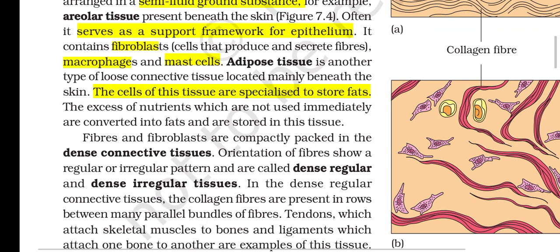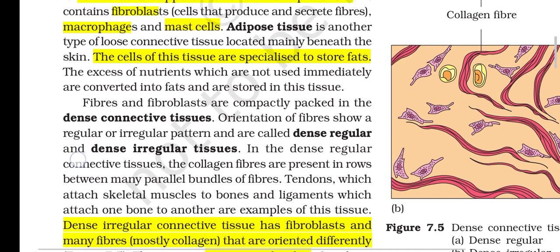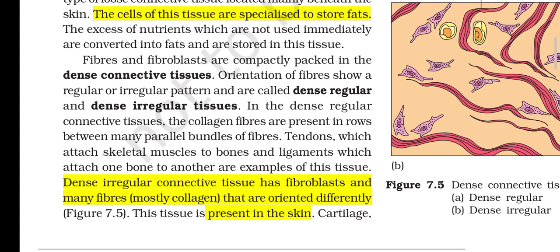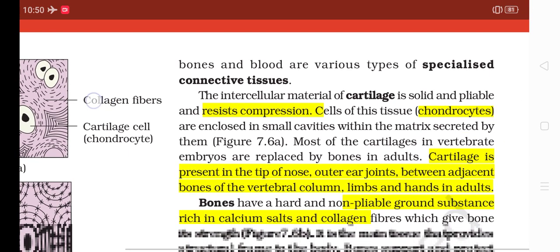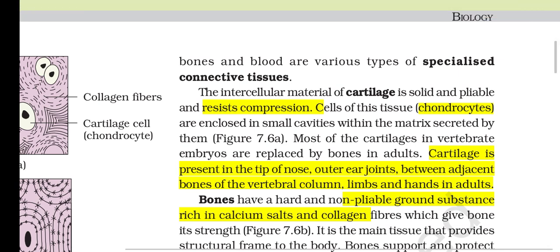Adipose tissue is another type of loose connective tissue located mainly beneath the skin; its cells are specialized to store fats. Excess nutrients not used immediately are converted into fats and stored in this tissue. In dense connective tissues, fibers and fibroblasts are compactly packed. Orientation of fibers may be regular or irregular, giving rise to dense regular and dense irregular tissues. In dense regular connective tissue, collagen fibers are present in rows between many parallel bundles of cells. Tendons, which attach skeletal muscles to bones, and ligaments, which attach one bone to another, are examples of this tissue.